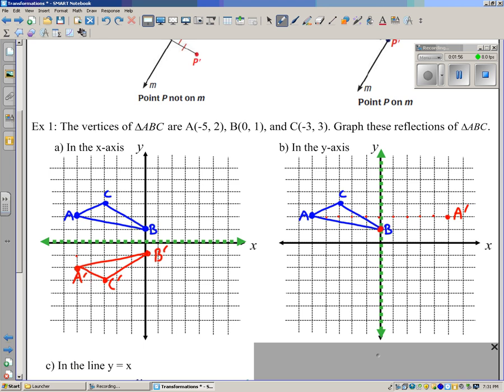B prime, where do you think that's going to be? It's going to be in the same spot because B is on the y-axis. And C prime is going to be right here, three units away from the y-axis.